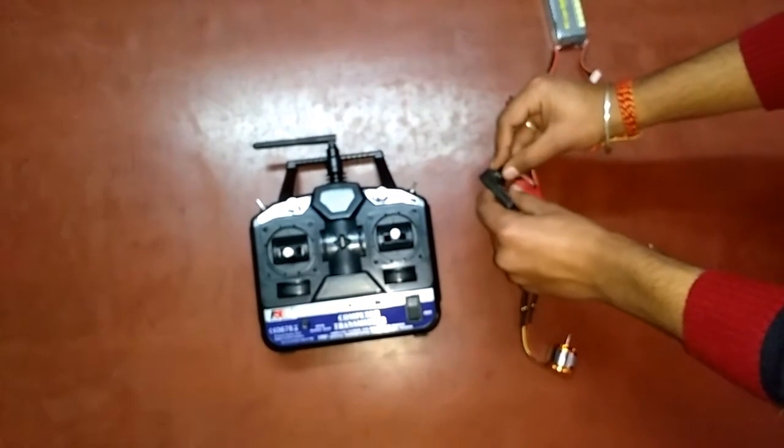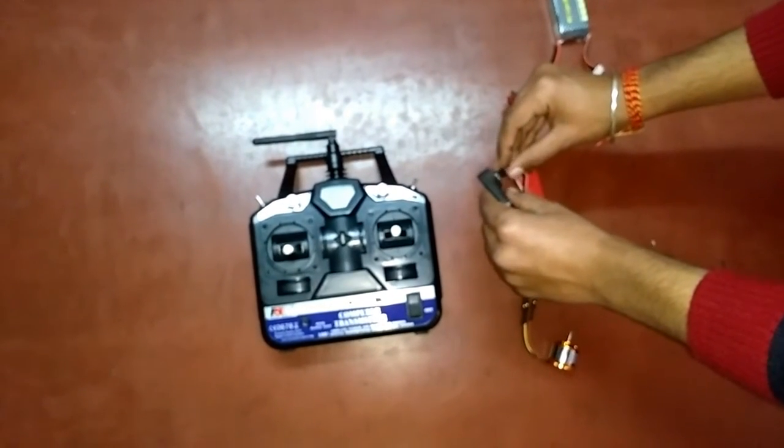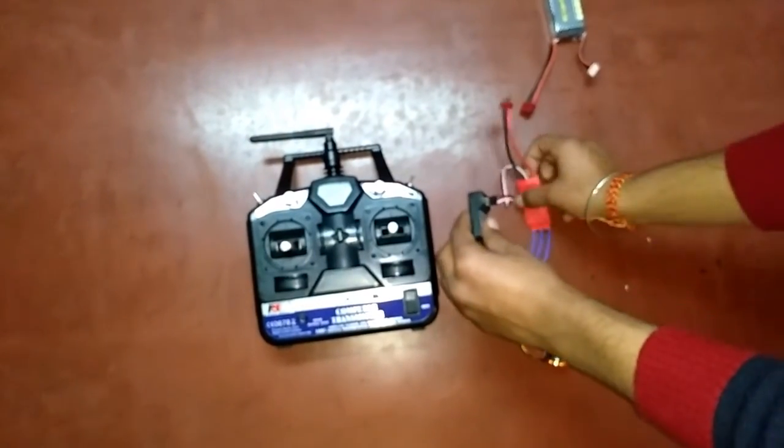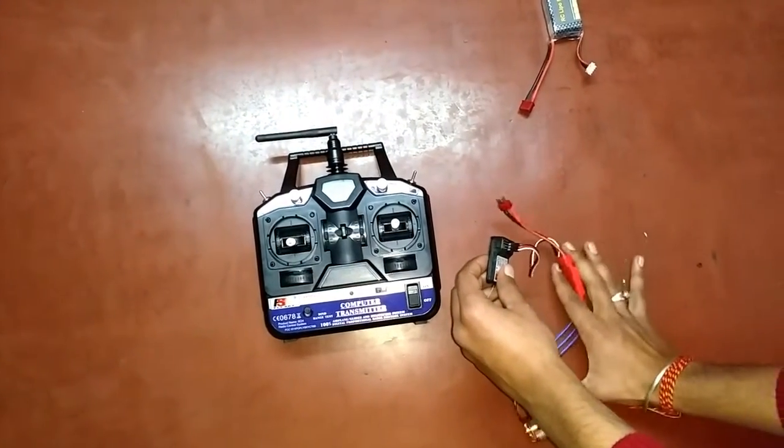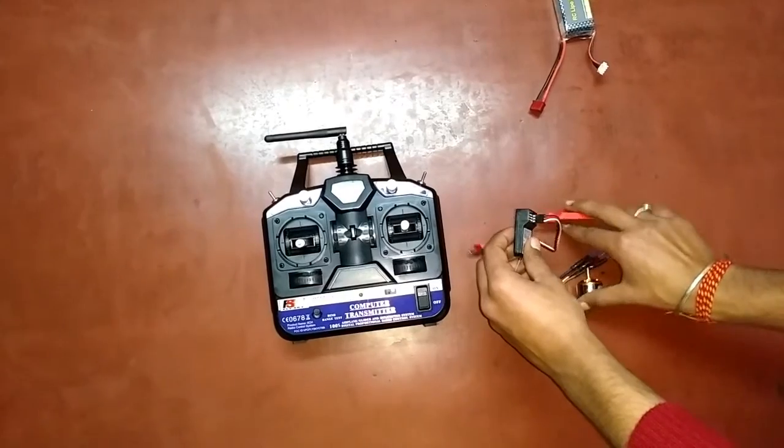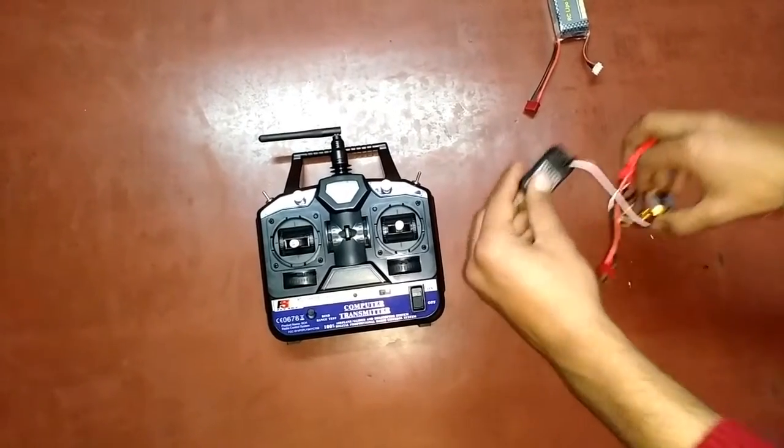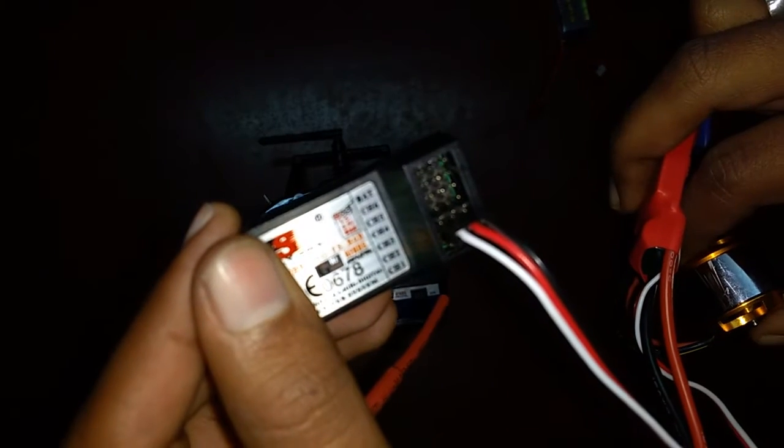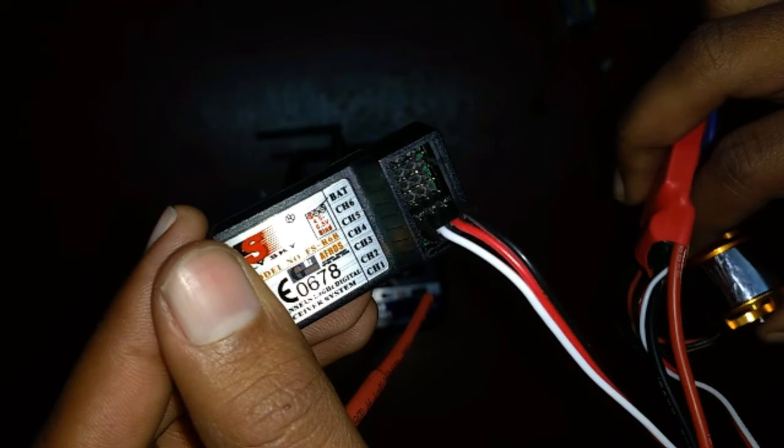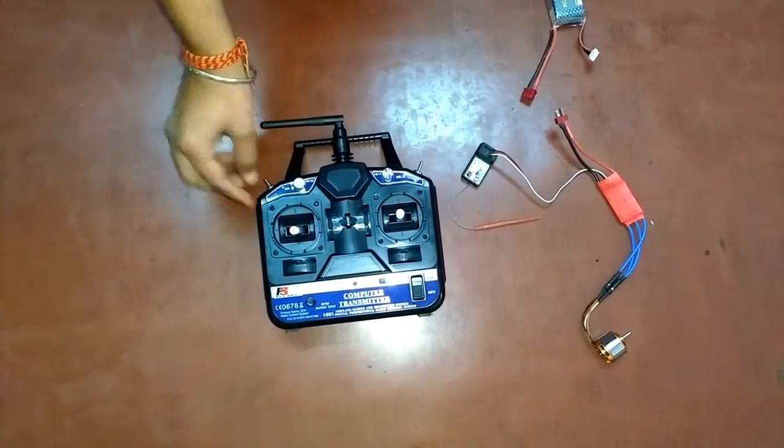So in order to do this calibration process, insert your three colored cable female connector in the throttle channel. In my case, my throttle is at channel number three in the same position as shown in the video: red cable at the center which is VCC, black at the outside of the receiver which is ground, and white at the inside of the receiver which is a signal pin.